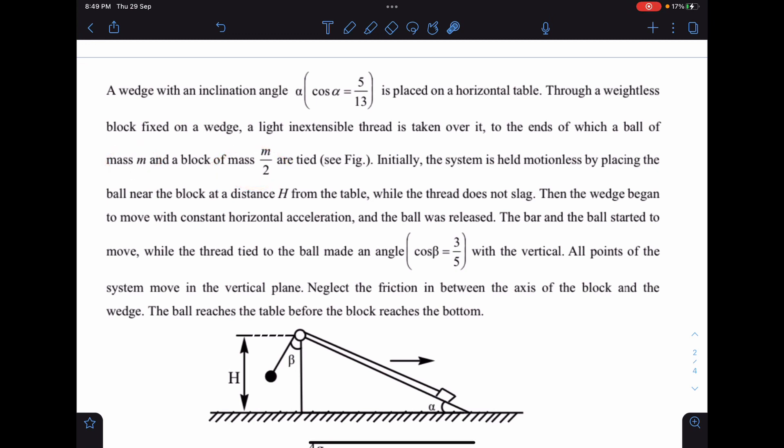Initially, basically this is the pulley and this thread is going over it. Initially the system is held motionless by placing the ball near to the block at a distance of H, so initially the ball is somewhere here, while the thread does not slack. So thread is not slacking means it is under tension only.